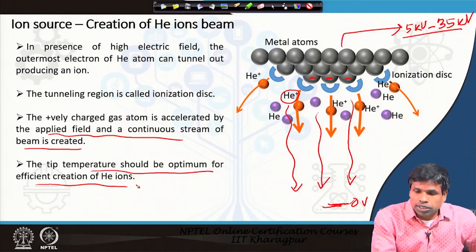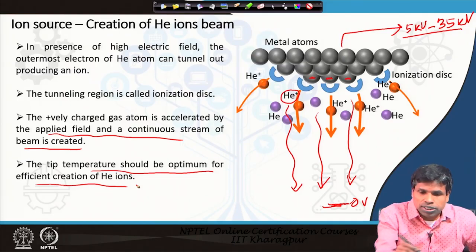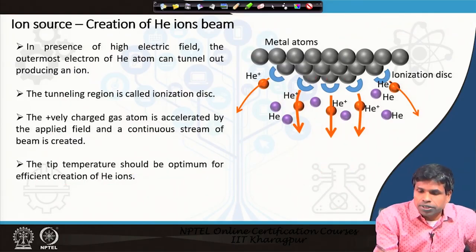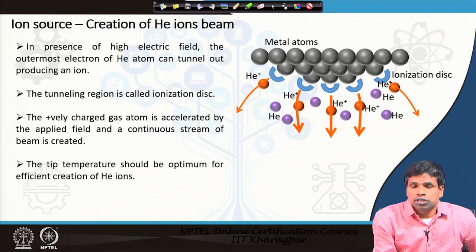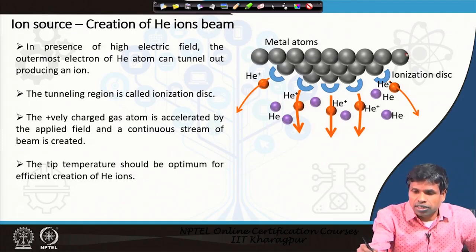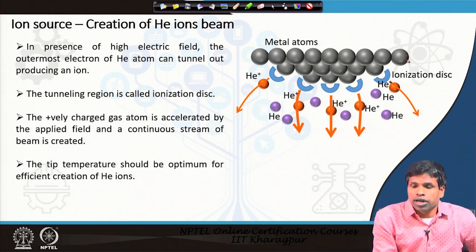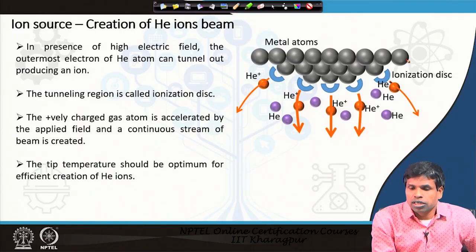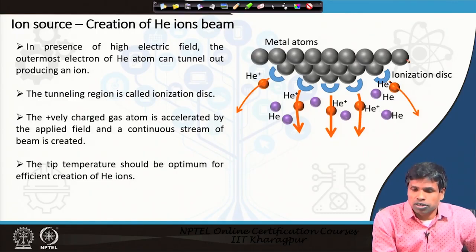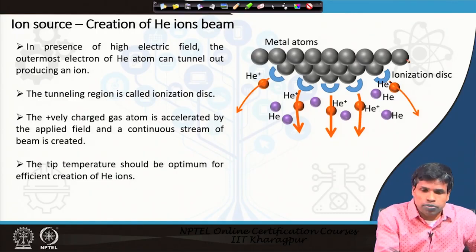During tip formation, if there are any loosely or weakly bound atoms at the tip surface, they automatically get evaporated and leave, aiding in the formation of the clean trimer-type tip.